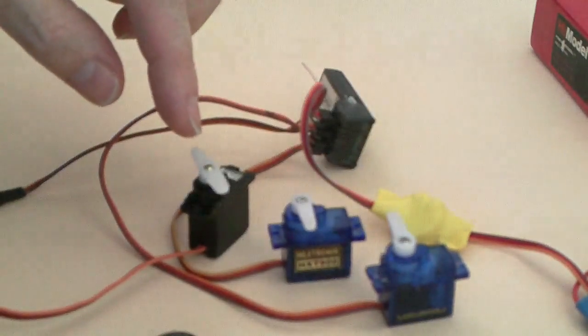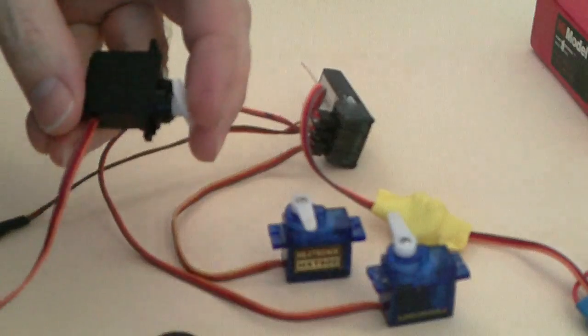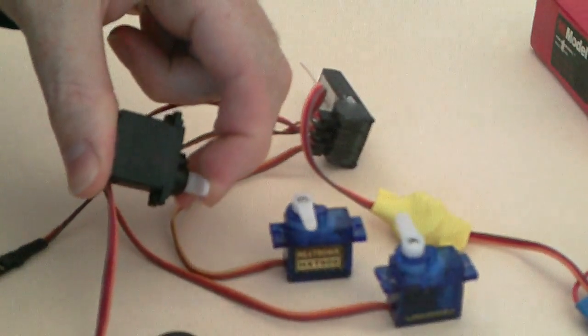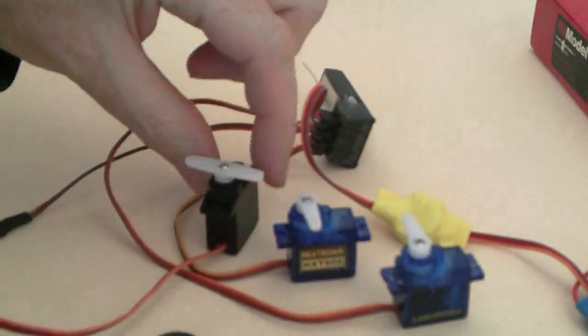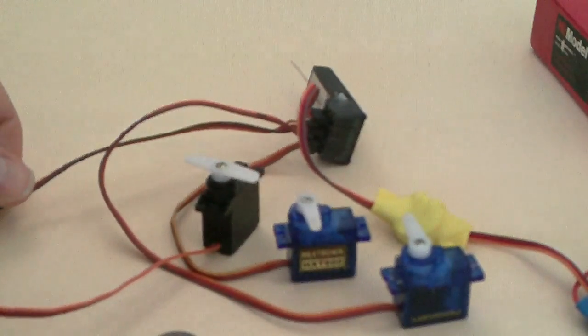If we put some load on the Corona servo just to make it draw more current, the twitching gets a lot worse. Right, now we'll add a ferrite core to the Corona servo.